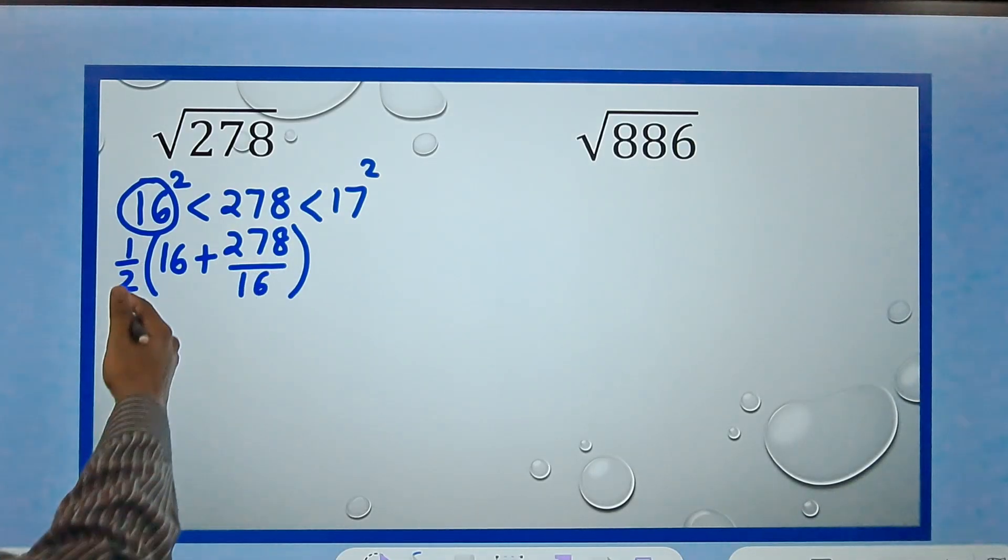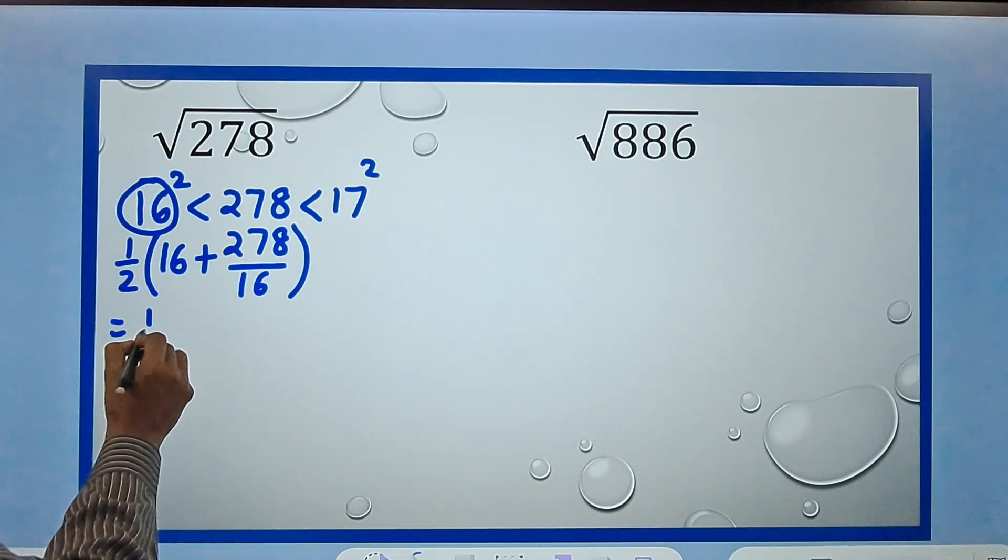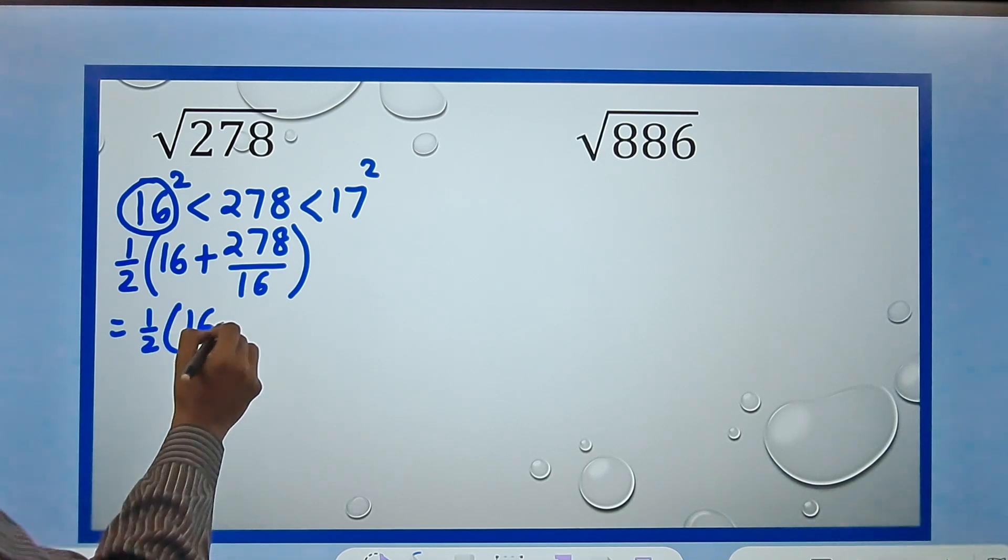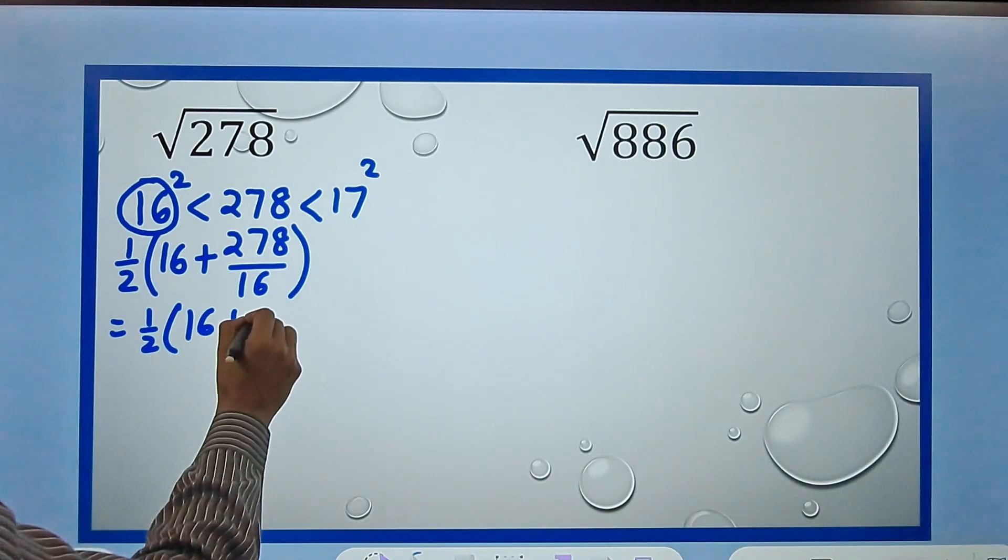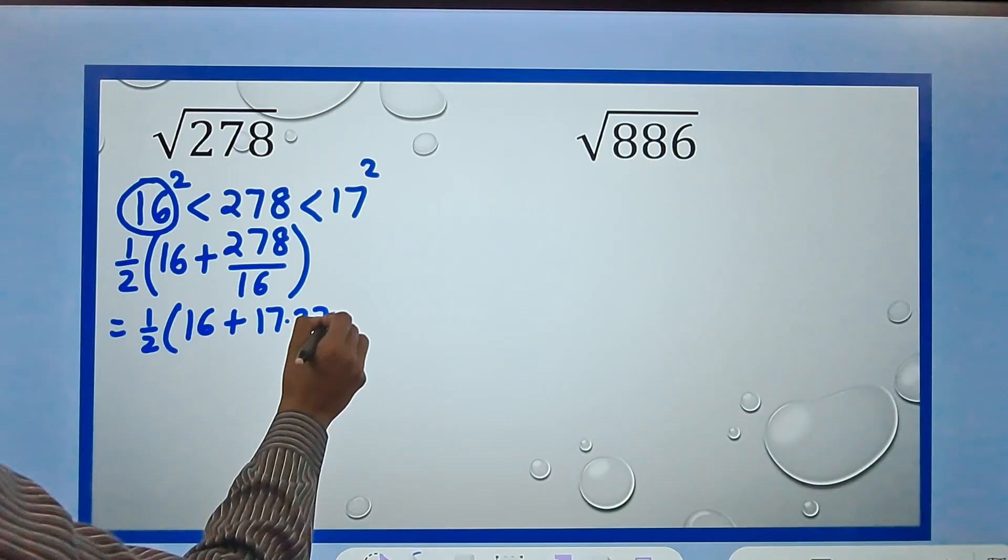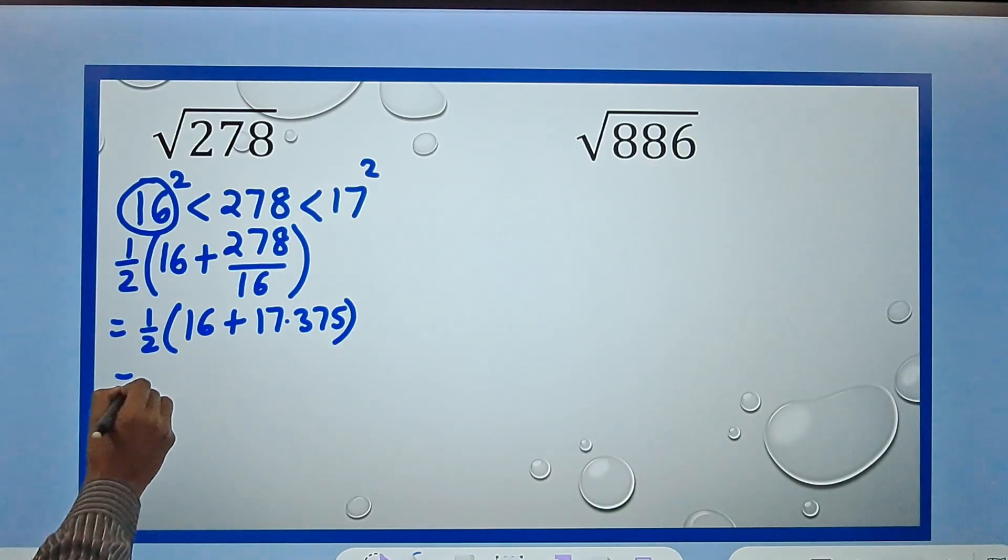I am reducing the number of steps now. This will be half of 16 plus, now I have to perform this calculation 278 divided by 16. I have already done it for you, this is 17.375, and half of 33.375 gives you the answer as 16.6875.